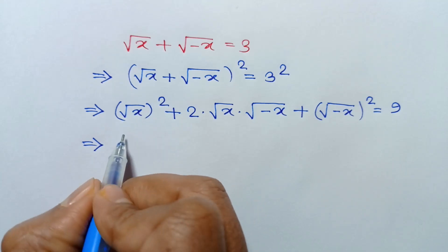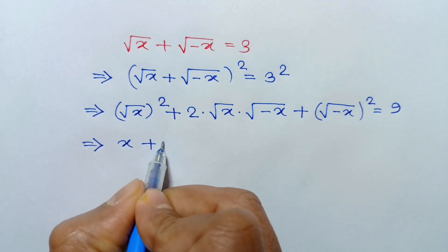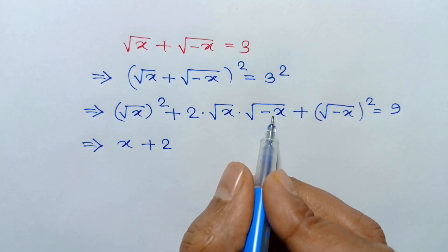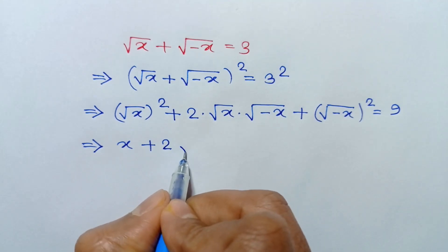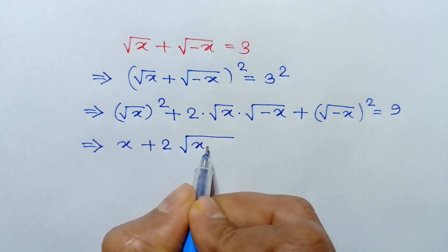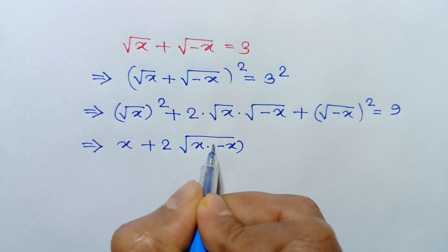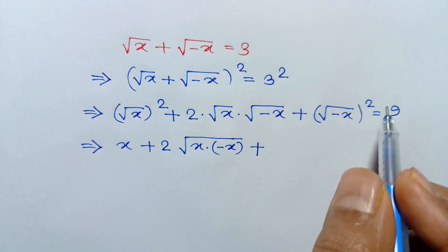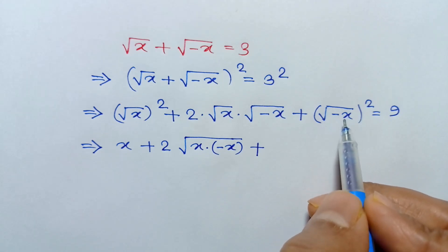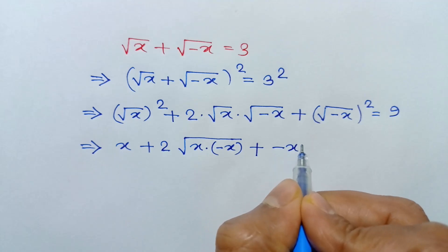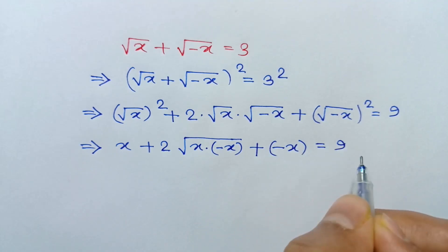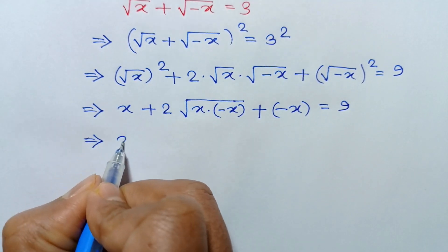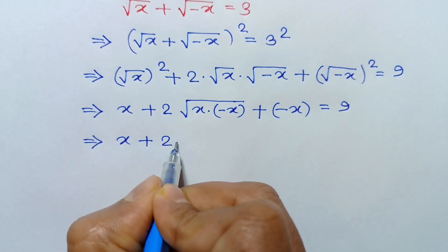The square root and square cancel out, so it becomes x, plus two times the square root of x times square root of negative x — which can be written as the square root of x times negative x — and the square root and square cancel on the last term, giving negative x, equal to 9.